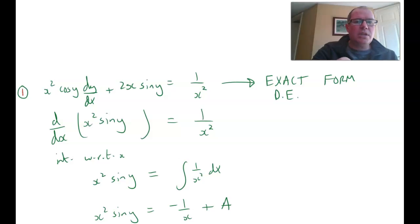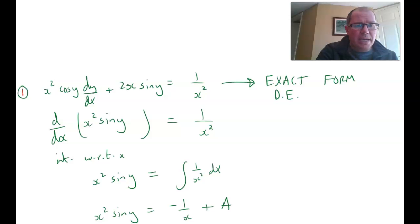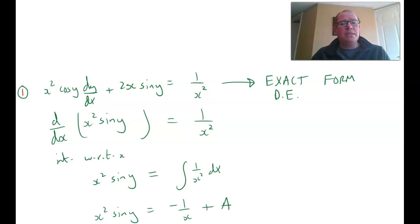I want you to look at this differential equation we have here. This is known as an exact form differential equation, because it can be written as the derivative of a product. If you differentiate x squared sine y, you get: differentiate sine y with respect to x, giving cos y multiplied by dy/dx, plus, using the product rule, differentiate x squared to 2x and write down the sine y. So that's the format of an exact form differential equation.